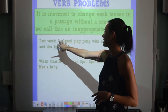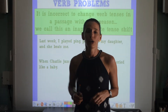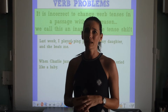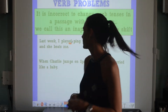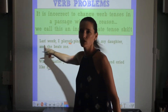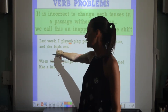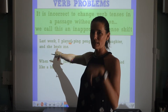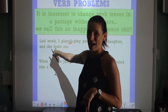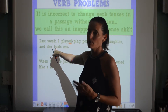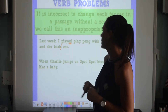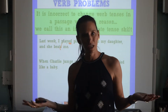An example: 'Last week I played ping pong with my daughter.' The verb 'played' is past tense because it has an -ED ending. Now I'll add to that sentence: 'Last week I played ping pong with my daughter and she beats me.' Well, 'beats' is present tense, not past tense. The past tense of 'beat' is 'beat' — it's an irregular verb. So it should say: 'Last week I played ping pong with my daughter and she beat me.'